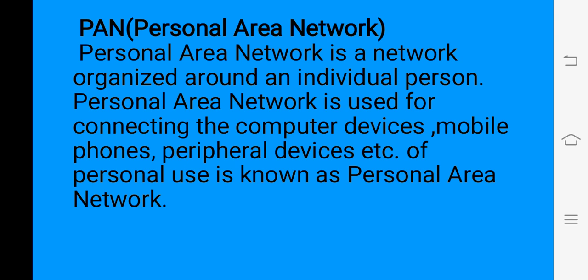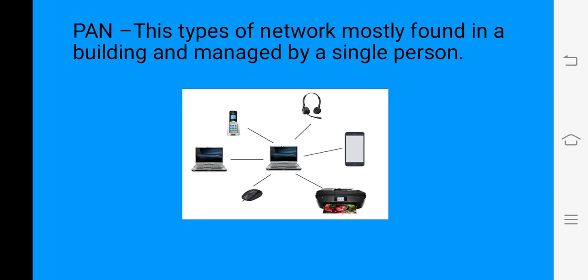For example, if we connect our mobile and our laptop with Wi-Fi, it is also a PAN — a personal area network — and by this network we can share our files between mobile and laptop or computer. This type of network is mostly found in a building and managed by a single person.